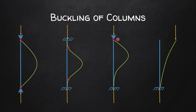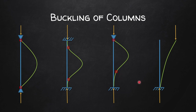In the third figure (one end hinged, one end fixed), we have a point of contraflexure right at the hinge support, and another one somewhere along the column where the center of curvature shifts from one side to the other. For the fourth figure (one end free, one end fixed), there is one point of contraflexure visible; the second one is not visible in the figure but there is no second point of contraflexure within the column itself.